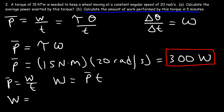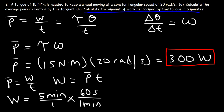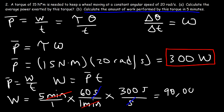Now let's find the work in five minutes. First, convert five minutes to seconds: there are 60 seconds in one minute, so five times 60 equals 300 seconds. Now multiply the time in seconds by the power in watts: 300 watts is 300 joules per second, and multiplying by 300 seconds gives us 90,000 joules. That is the rotational work done by this torque in five minutes.